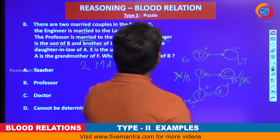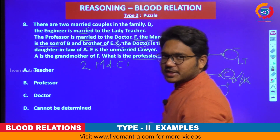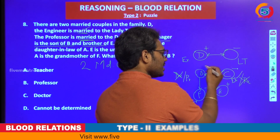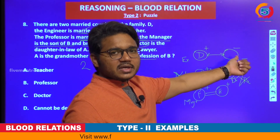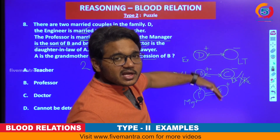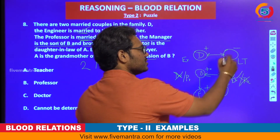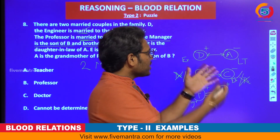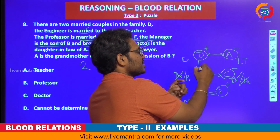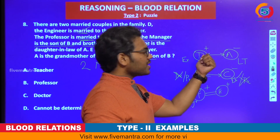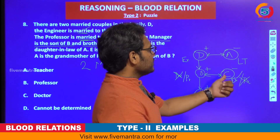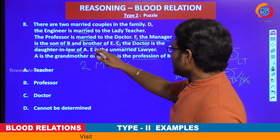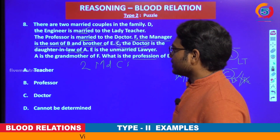The whole thing described in the problem statement is located in this relationship tree. Now we try to solve the actual question. What is the profession of B? While constructing this relationship tree, we already identified B's profession — professor. Our answer is professor, option B.